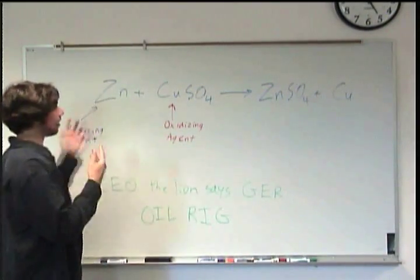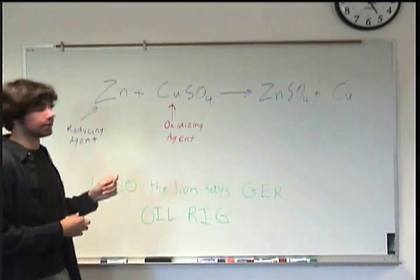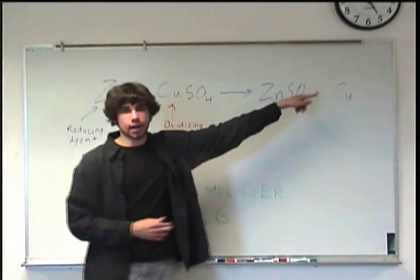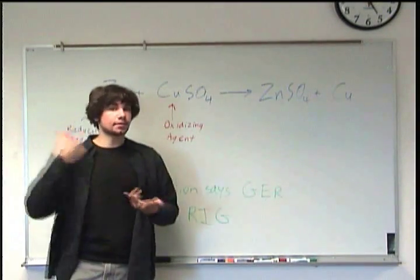In today's episode we're going to be talking about oxidation reduction reactions. On the board, we have an example of one of those things. We have zinc and copper sulfate reacting to make zinc sulfate and copper. Now you've probably noticed that this reaction not too much has changed. You know, we still have zinc, still have sulfate, still have copper.